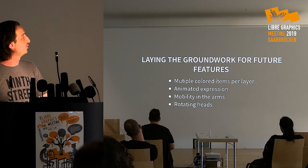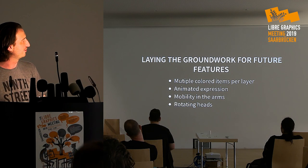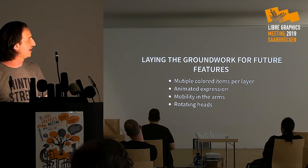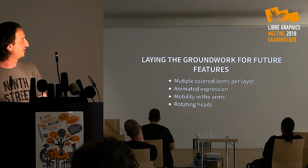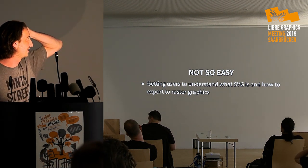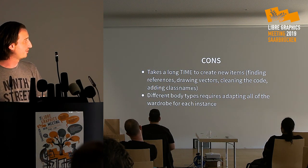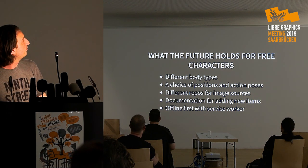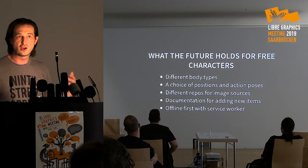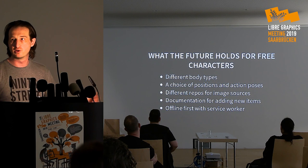Right now you can only change one color per item, but I'm halfway done on a multiple-color feature. Animations are coming — the male template has sectioned arms that will eventually be movable, same with eyes. I hope to add rotating heads. Different body types require drawing all the items, and the future holds different body types, positions, and hopefully separating the image repo so other artists can use the code base with their own style of characters.